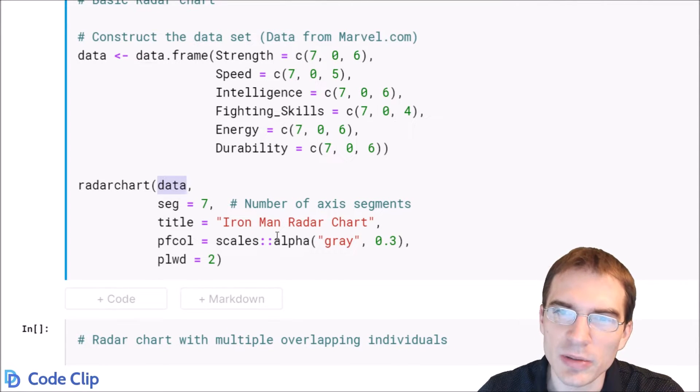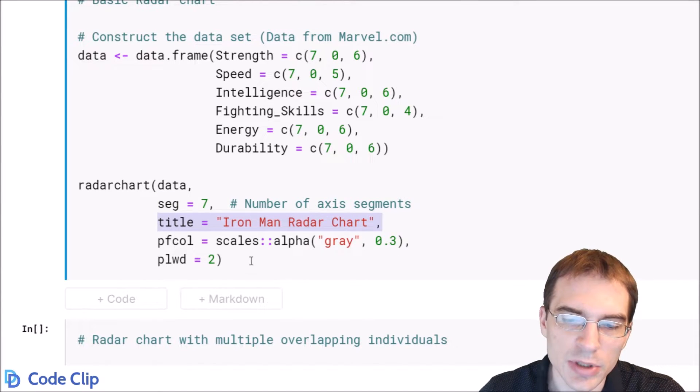And then we just have a couple extra arguments to help set up the plot. Here we're saying we want 7 segments because each of our attributes goes up to 7. We're giving the plot a title and we're just specifying some color options and line width here.